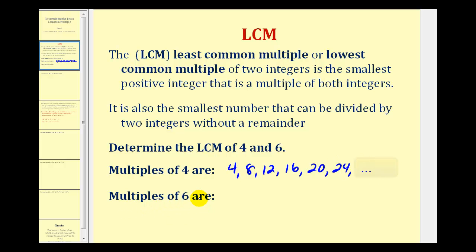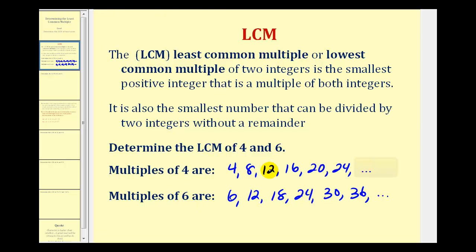If we start listing multiples of six, or counting by sixes, we'd have six, twelve, eighteen, twenty-four, thirty, thirty-six, and so on. Now let's see if we can find any common multiples. Notice both lists contain twelve as well as twenty-four, but twelve is the smallest multiple they have in common, and therefore the least common multiple of four and six is equal to twelve. Twelve is also the smallest number divisible by both four and six.